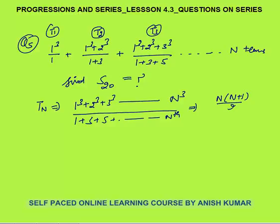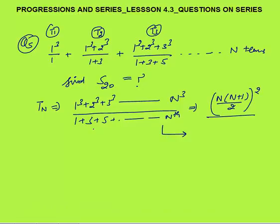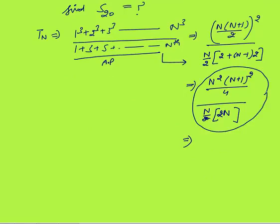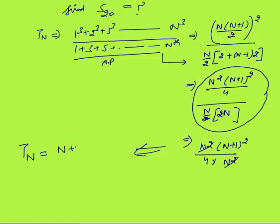By common sense, the numerator of the nth term is 1³+2³+...+n³, which equals [n(n+1)/2]². The denominator is 1+3+5+...+(nth odd number), which is an AP. Using the sum formula: n/2×[2×1 + (n−1)×2] = n². So the nth term is [n(n+1)/2]² / n² = n²(n+1)²/4 ÷ n² = (n+1)²/4.